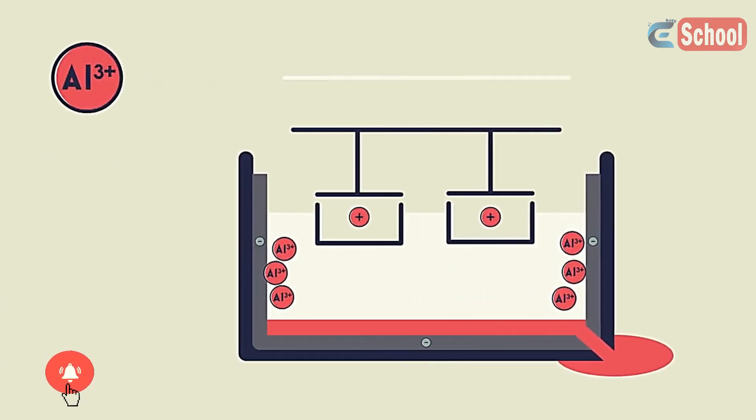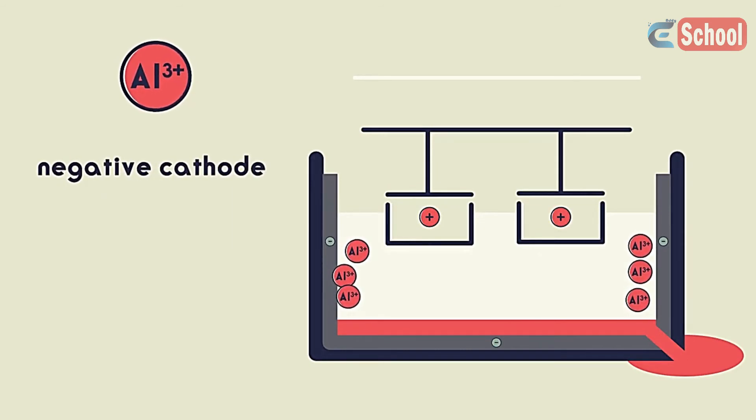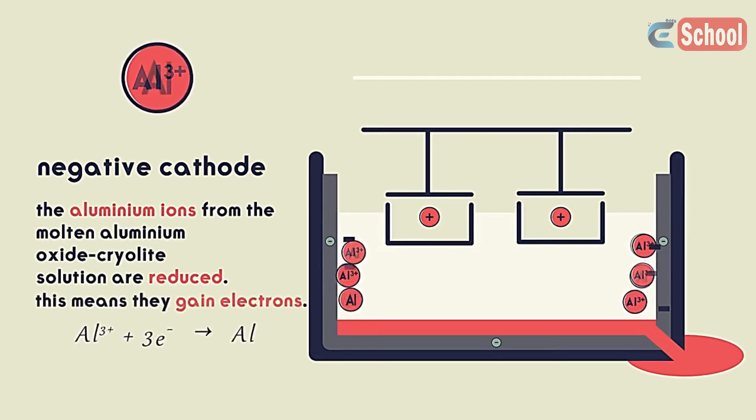Let's have a quick look at the reactions at the electrodes. At the negative cathode where the aluminium forms, the aluminium ions from the molten aluminium oxide cryolite solution are reduced. This means they gain electrons.